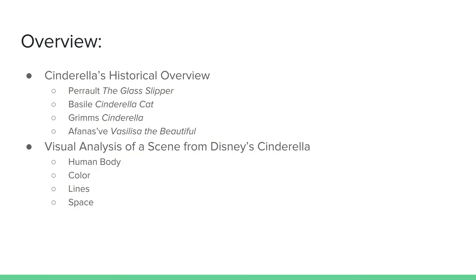Our presentation is focused on Disney's version of Cinderella, which was released in 1950. In our historical overview, we focused on Perrault's Cinderella, or the Little Glass Slipper, Basile's Cinderella Cat, Grimm's Cinderella, and Afanasiev's Vasilisa the Beautiful. For our visual analysis, we picked the scene where Cinderella and the Prince are dancing at the ball. We discussed the human body, the color, the space, and the lines in the scene and how they are interpreted.